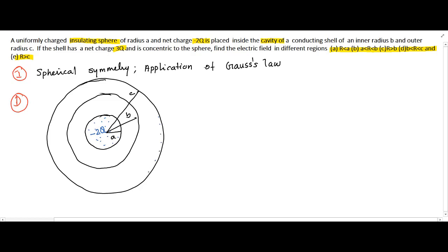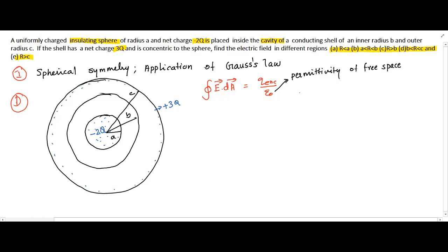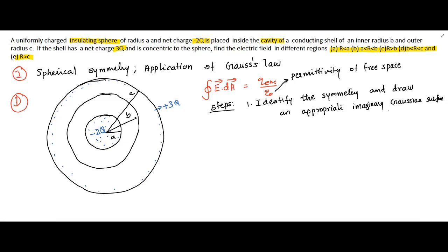As mentioned, we can use Gauss's law here. Gauss's law states that the surface integral of electric field E equals the charge enclosed divided by epsilon-zero, where epsilon-zero is the permittivity of free space. Gauss's law can be used to find the electric field only if we can find symmetry in the problem. The first step is to identify the symmetry and draw an appropriate imaginary Gaussian surface at the region where we want to evaluate the electric field. This question is a clear case of spherical symmetry as all charges are distributed symmetrically about a center point.